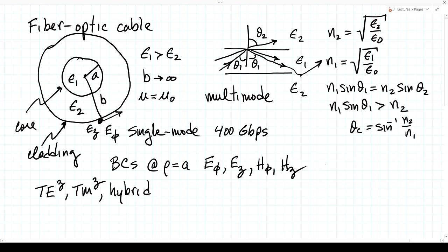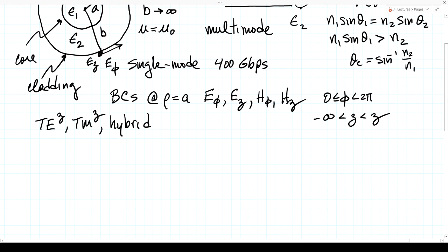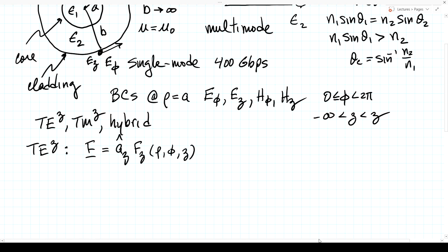These boundary conditions must hold for all phi from 0 to 2pi and all z, which means the core and cladding solutions must have the same functional dependence on phi and z, but can differ in rho. Looking at TEz modes, we use an electric vector potential with only a z-component, expressed in cylindrical coordinates as a function of rho, phi, and z, with separate forms for the core and the cladding.